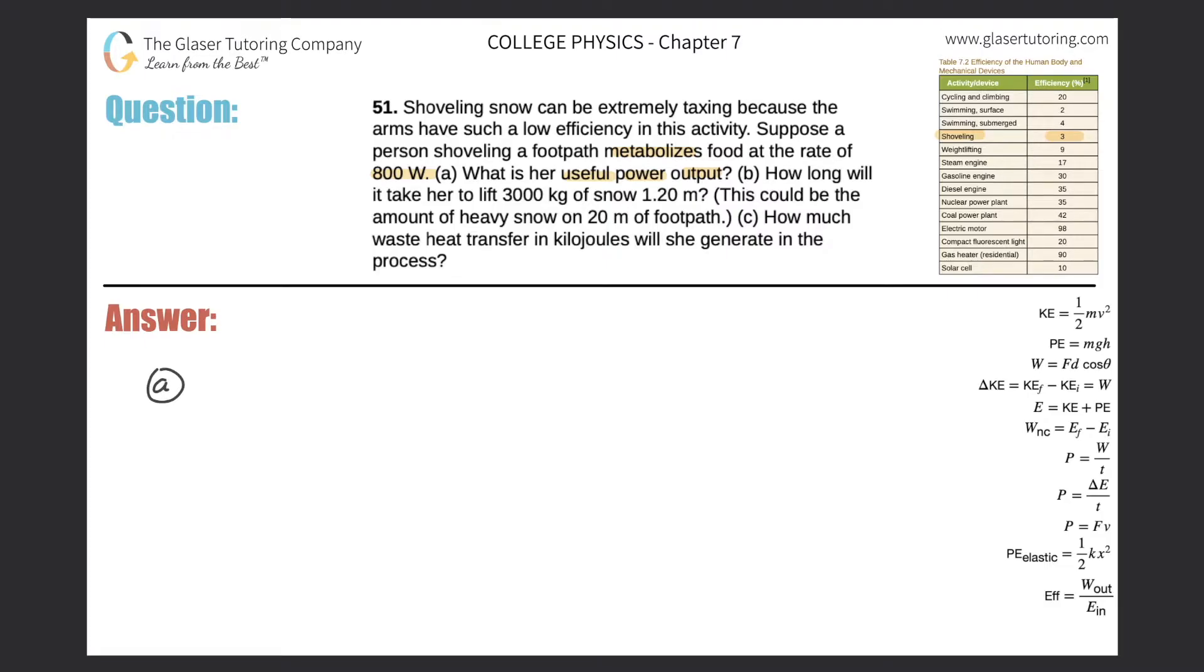So now for letter A, I'm thinking in terms of the efficiency formula down here on the bottom right. That tells me that the efficiency of a certain process is equal to the useful work put out divided by the energy put into that process. So the efficiency here for shoveling is three percent, so I have to convert that to a decimal, so it'll be 0.03.